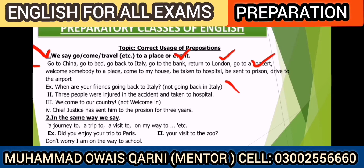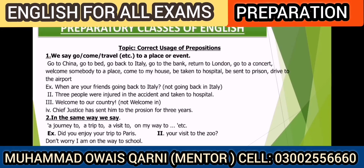Similarly, 'sent to the prison' — the police has sent three prisoners to the prison. You can say the chief justice sent honest people to the prison. Next: 'drive to the airport' — it is a request to you to drive fast to the airport. So you now have an idea about these preposition usages.